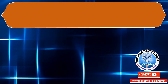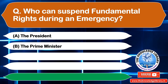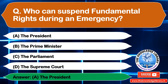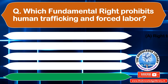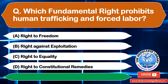The next question is: which fundamental right protects against human trafficking and forced labor? Option A: Right to Freedom, Option B: Right Against Exploitation, Option C: Right to Equality, Option D: Right to Constitutional Remedies. The correct answer is Option B: Right Against Exploitation.